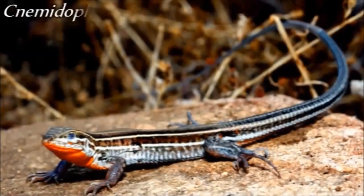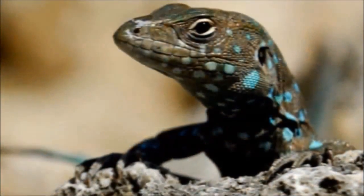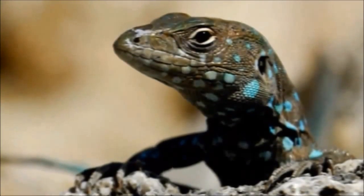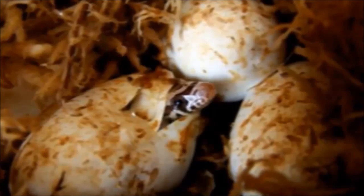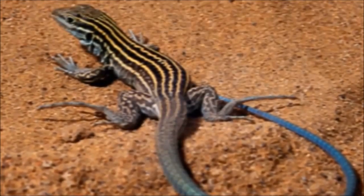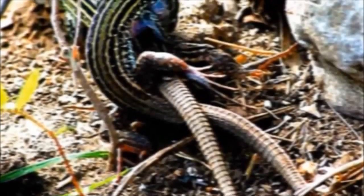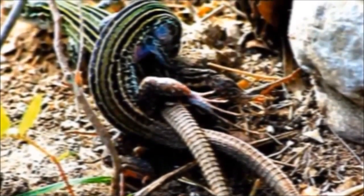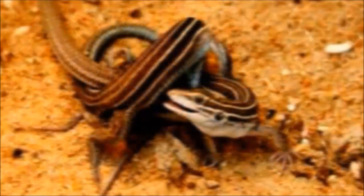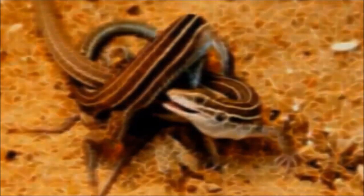Certain species of the whiptail lizard of the genus Nymidophras only exist in the female sex. Although this might seem like a problem when it comes to propagating the species, females do not require a male for reproduction, as they engage in parthenogenesis, a form of asexual reproduction where an unfertilized egg develops into a new individual. Despite the fact these lizards reproduce asexually, some female lizards try to act like a male by mounting another female in the futile attempt at copulation. Because these lizards evolved from a species that reproduced through sexual fertilization, the unnecessary practice of engaging in fake sex is viewed as a vestigial behavior, a remnant of their ancestral nature.